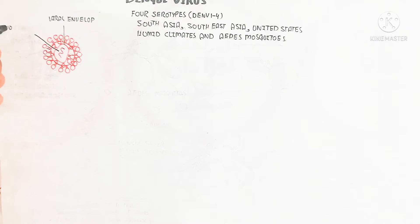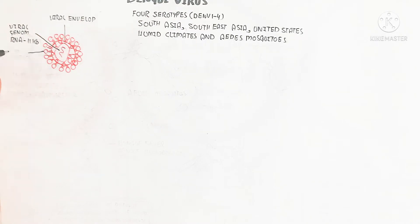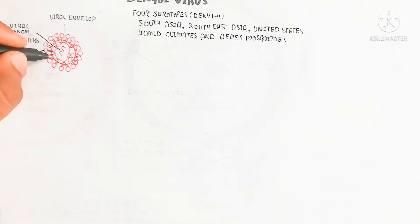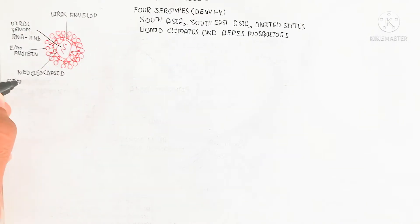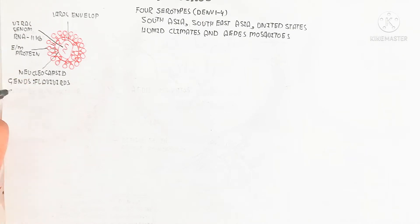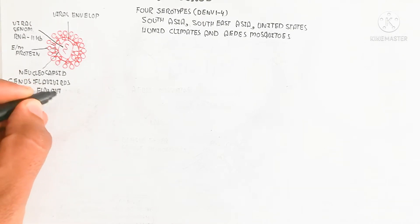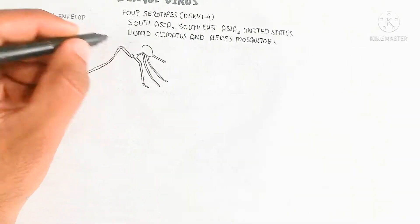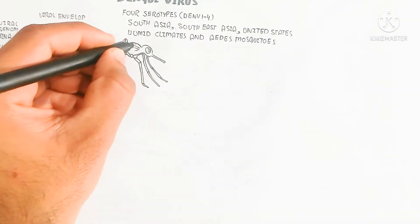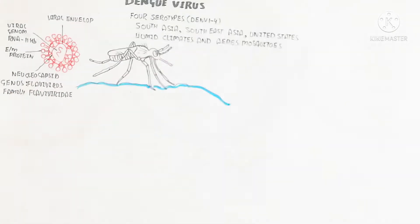Here is the structure: the viral envelope and the viral genome. Inside is the RNA, which is 11KB segment. The E and M protein are present, and the nucleocapsid is present. The E and M proteins are basically on the basis of the species and family.